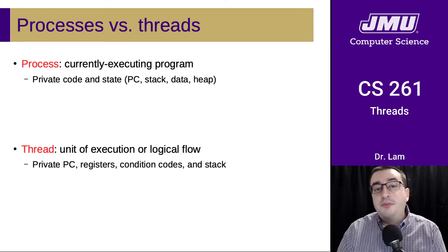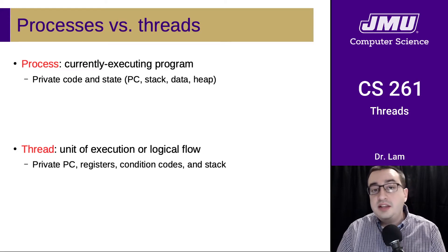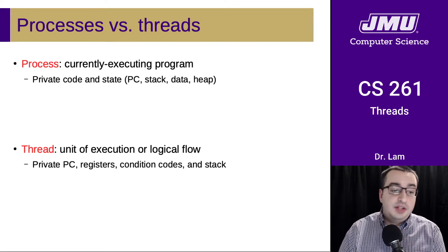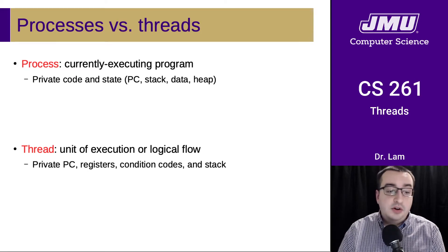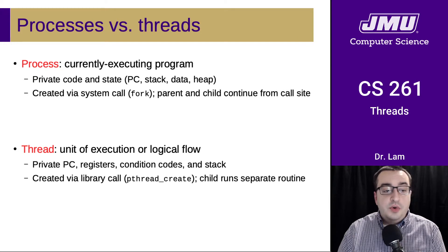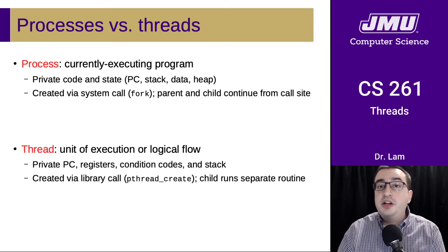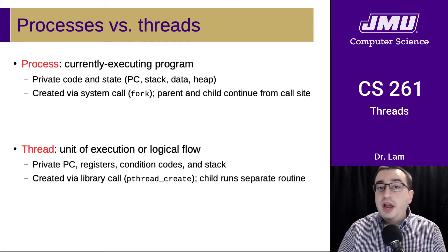Processes have private code and state, and threads have private program counters, registers, condition codes, and stack. They are also created differently. Processes are created via the fork system call, and the parent and child continue from the same call site. Threads are created via a library call.